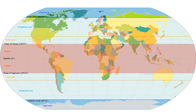Oceanic climates are created by the onshore flow from cool high-latitude oceans to their west. This causes cool summers and cool winters, with relative humidity and precipitation evenly distributed along the year. These climates are frequently cloudy and fairly mild both in winter and summer. Annual rainfall is spread throughout the entire year. Regions with this climate include northwestern Europe, northwestern North America, southeastern and southwestern South America, southeastern Australia, and most of New Zealand.